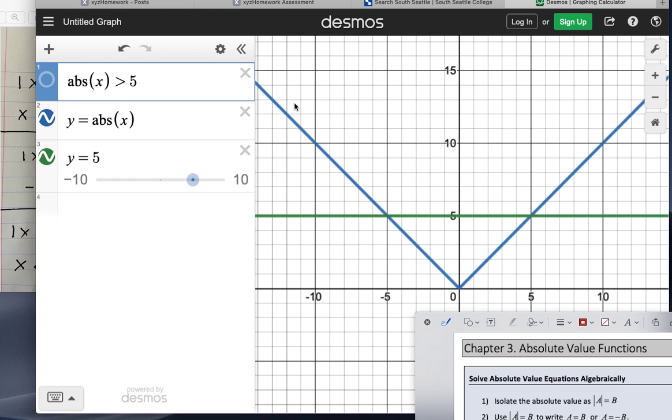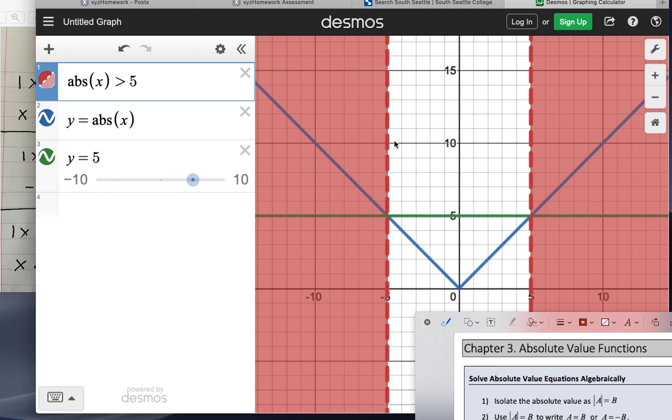Because what we're finding is where it's above the graph. So again, if I turn on the equals, you can see the red is showing me where my solutions are. So it's everything less than negative 5, everything greater than positive 5. And these are going to happen every single time.